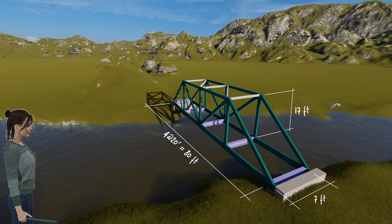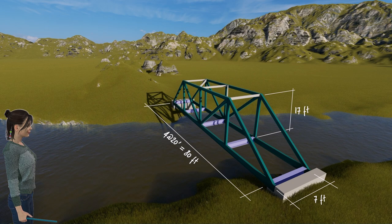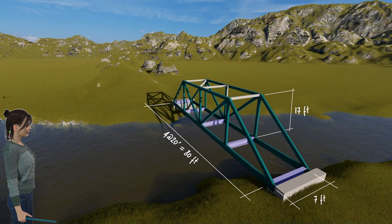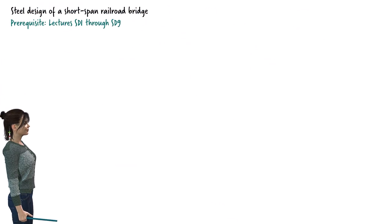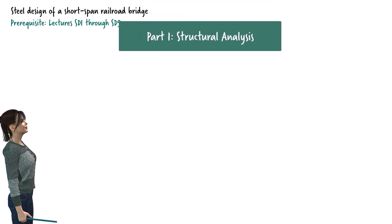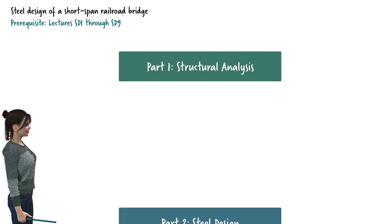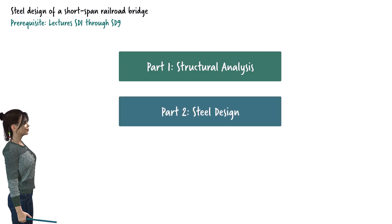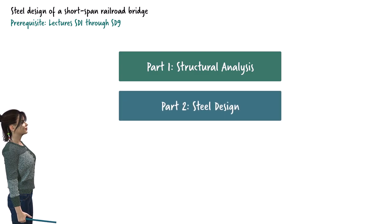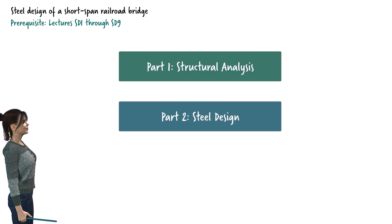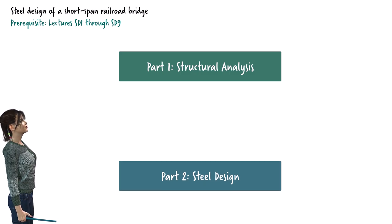Each truss must be designed for half of the train's total load exerted on the bridge. This lecture consists of two parts. Part 1 covers the analysis of the bridge. The design of the structural elements is presented in Part 2. See the video description field for the link for Part 2 of the lecture.